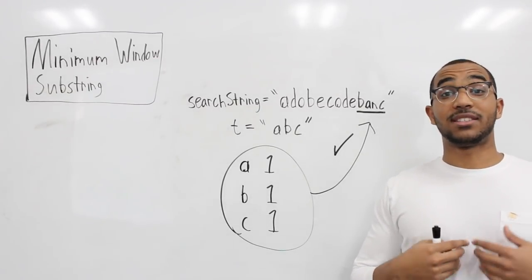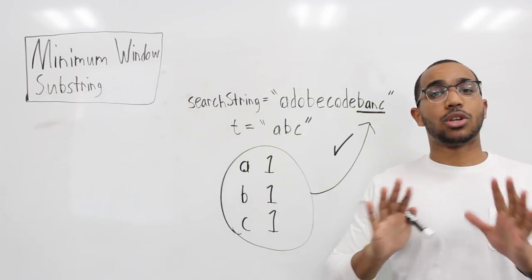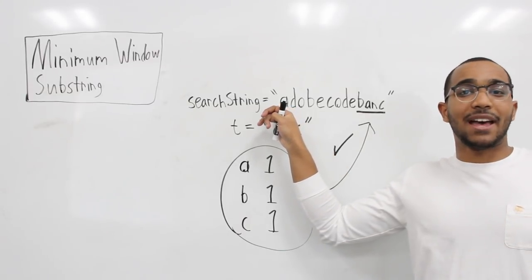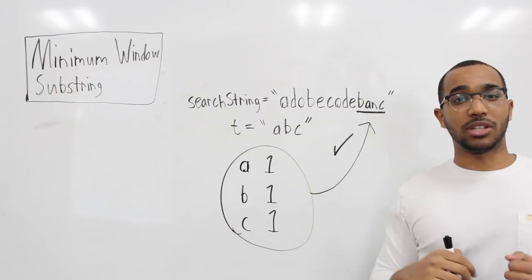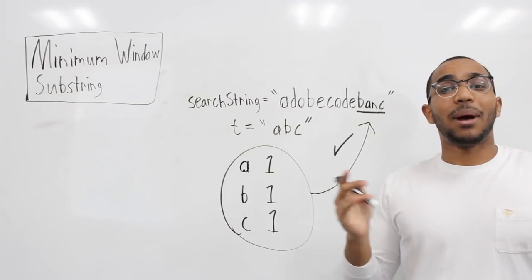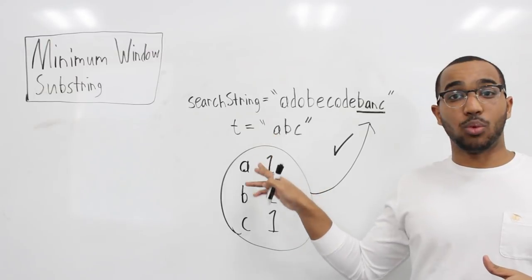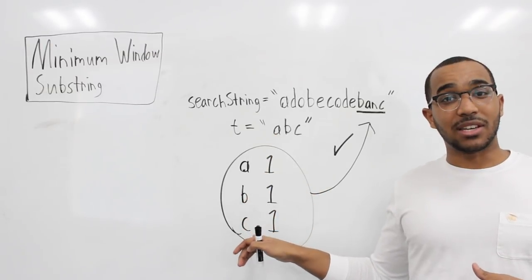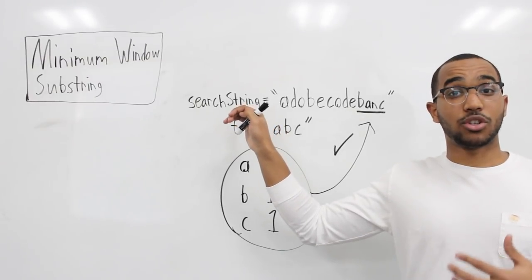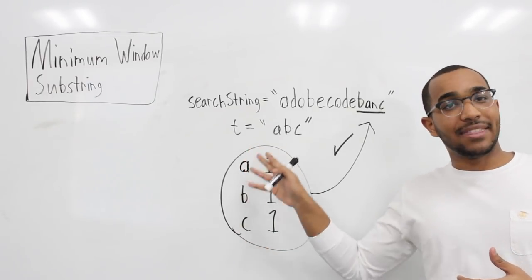Today we're going to cover a fairly challenging question called minimum window substring. I'm given two strings: a search string S that I need to search in, and a character string T consisting of certain characters. What I care about are the counts — the string T has one A, one B, and one C. My job is to find the smallest window in the search string that has at least all of these characters in their respective amounts.